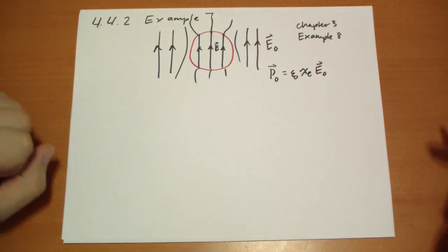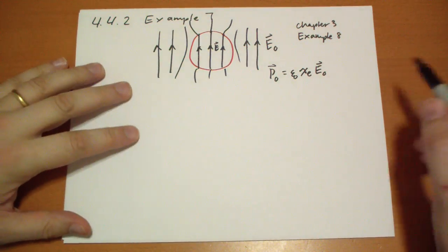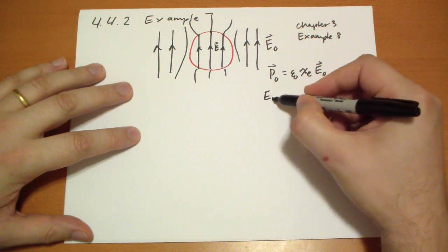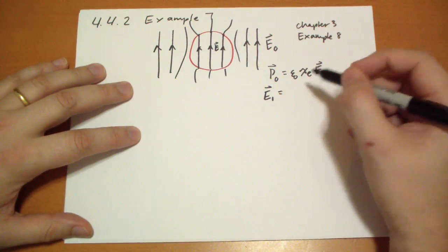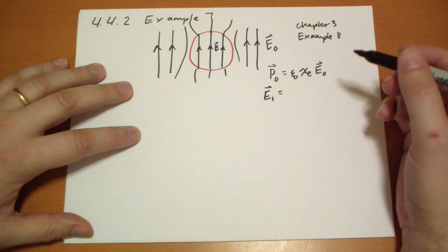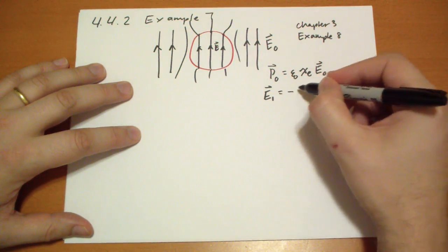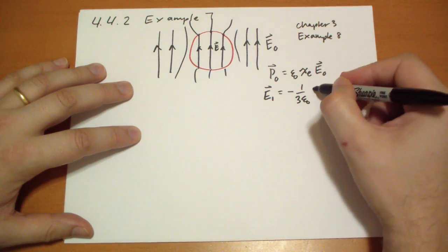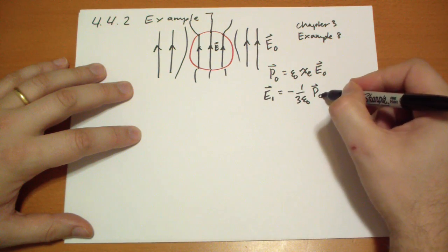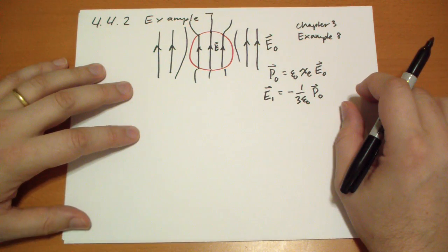And then the question is, what is the electric field produced by that polarization? So I'm going to call this E₁, is produced by the polarization. We solved this problem back in example 2 of section 4.2.1. We get negative 1 over 3 ε₀ of the polarization that we just produced.